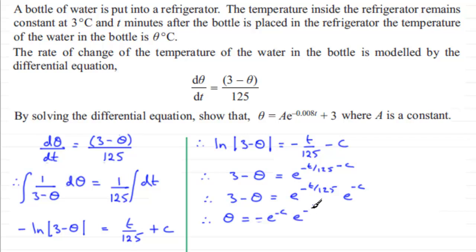Now if I let A, another constant, equal minus e to the minus c, I can do that because e's a constant, c's a constant, so I'm just going to get a constant here.